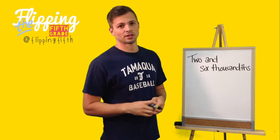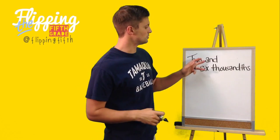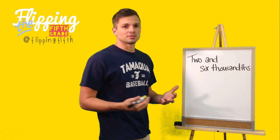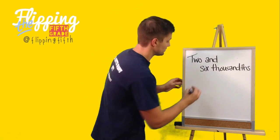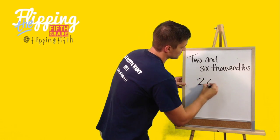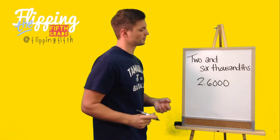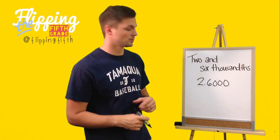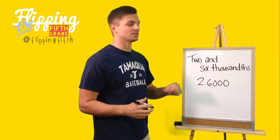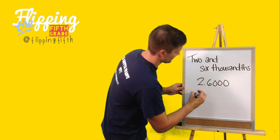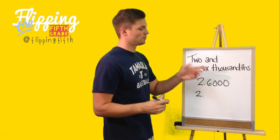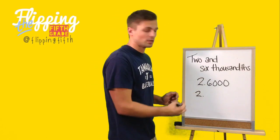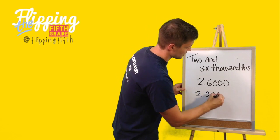How would I write 'two and six thousandths' in standard form? A common misconception is that some people would write 2.6 for two and six thousandths — but that number is actually two and six-tenths. To write two and six thousandths correctly, we know 'thousand' has three zeros, so we must have three digits behind our decimal: two zeros and a six. The correct standard form is 2.006.